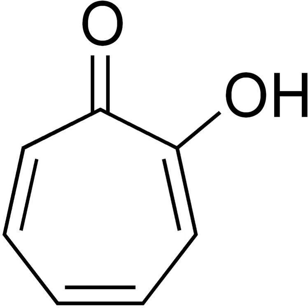Synthesis and reactions. Many methods have been described for the synthesis of tropolone. One involves bromination of 1,2-cycloheptanedione with N-bromosuccinimide, followed by dehydrohalogenation at elevated temperatures, and by alkaline condensation of the ethyl ester of pimelic acid, the alkaline condensation again followed by oxidation by bromine.